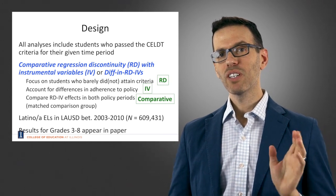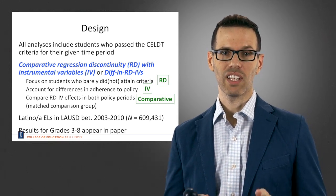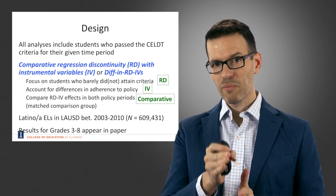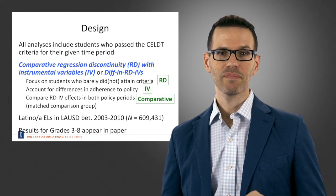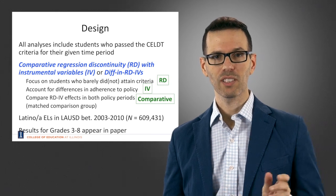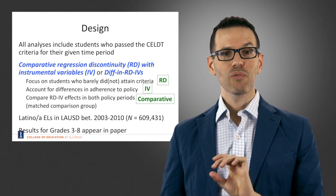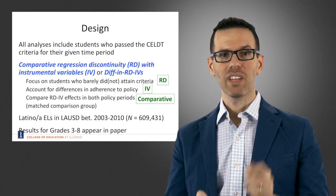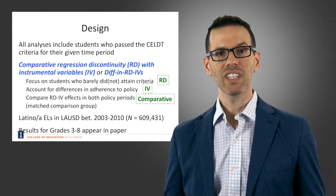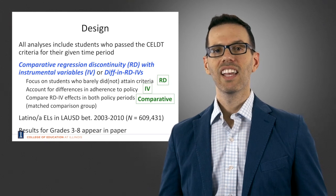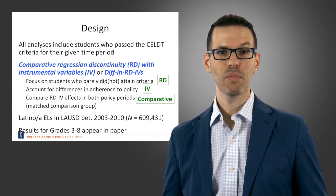We focus on students who barely did and barely did not attain the final criterion — the California Standards Test of English Language Arts. This is the regression discontinuity component: it compares kids just below and just above the threshold. We then account for differences in adherence to the policy using the instrumental variable component. We have two estimates, one per policy period, and we subtract one effect estimate from the other — that's the comparative or differencing stage. There is also a matched comparison group with inverse probability of treatment weighting, and results are robust to all these specification checks.